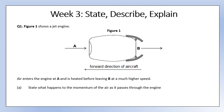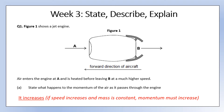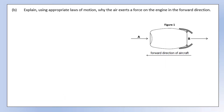Air is going in at A, traveling to the right, and it's heated up inside the engine and leaves at B at much higher speed. The question asks us to state what happens to the momentum of the air as it passes through the engine. Stating questions are straightforward - the answer is it increases. If the speed increases and the mass stays constant, its momentum must increase, but all you needed here was 'it increases'.